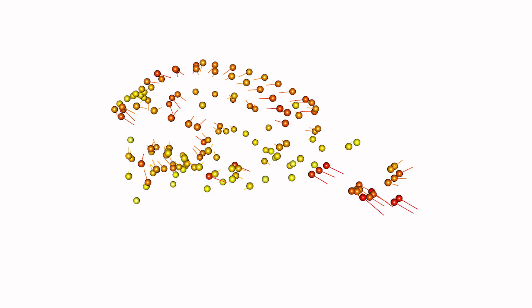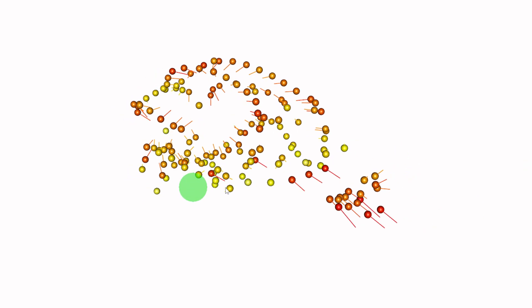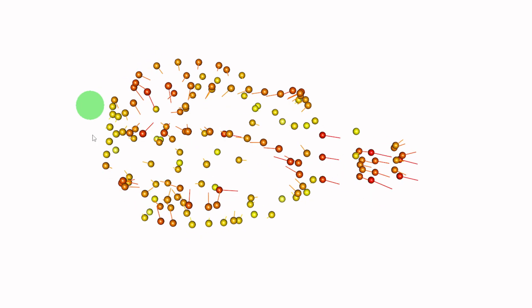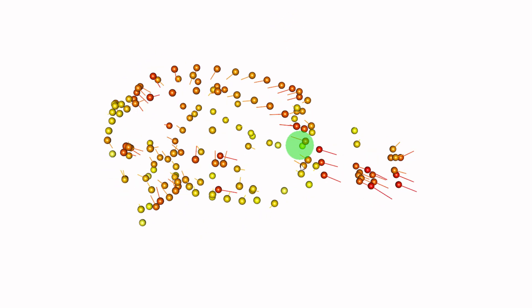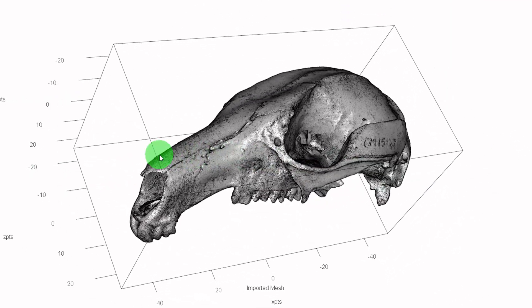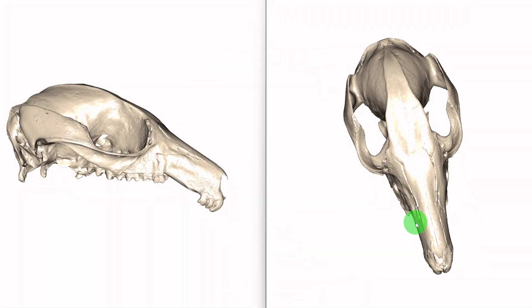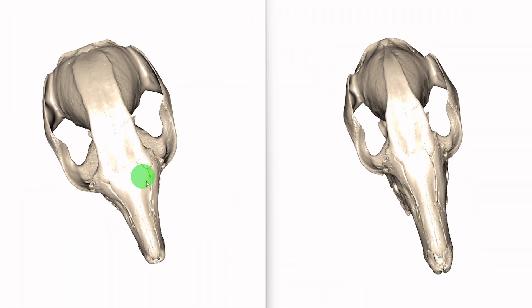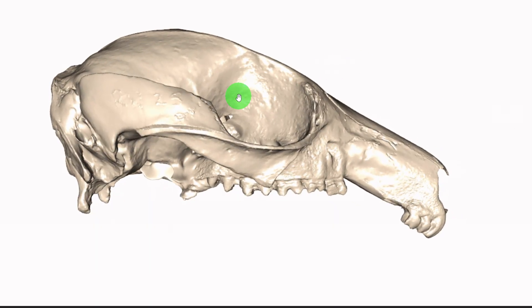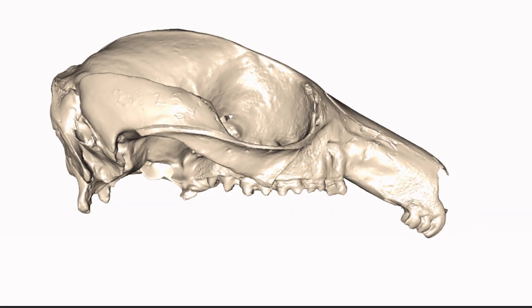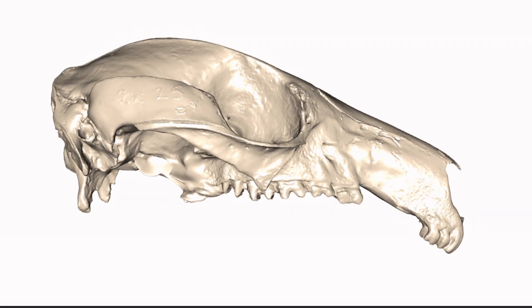Let's visualize how skull shape changes with size. In this image, the orbs represent the shape of the smallest size, and the ends of the lines represent the shape of the largest size. We can see that in general, a larger rock wallaby skull will have a longer face, a smaller brain, and smaller eye sockets. Let's bring in a mesh of a rock wallaby from the sample and warp it to the predicted shapes of the smallest and largest skulls. Check out this morphing animation — you can see how the skull proportions shift as the animals get bigger.